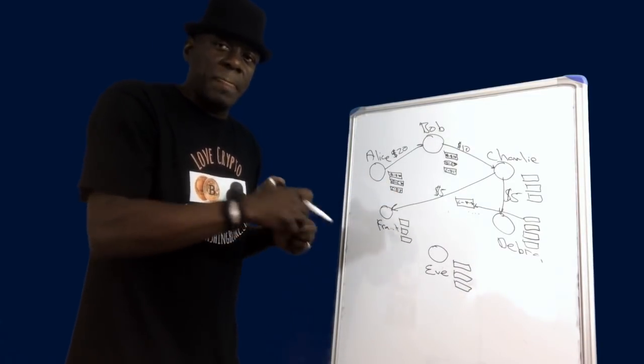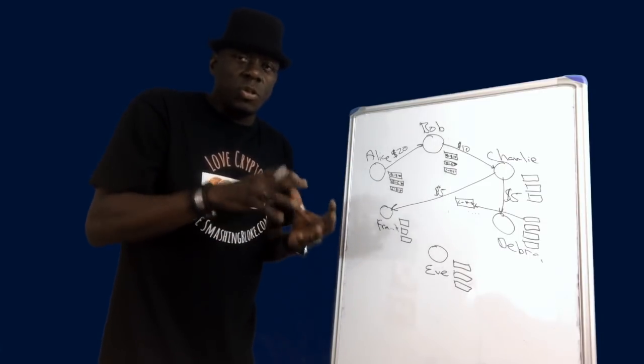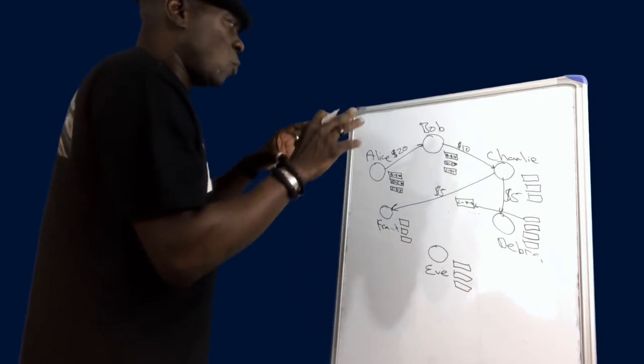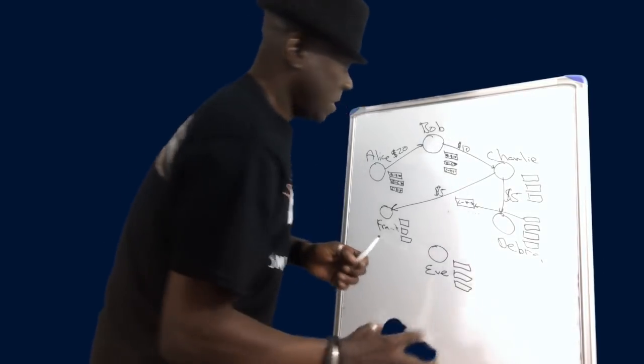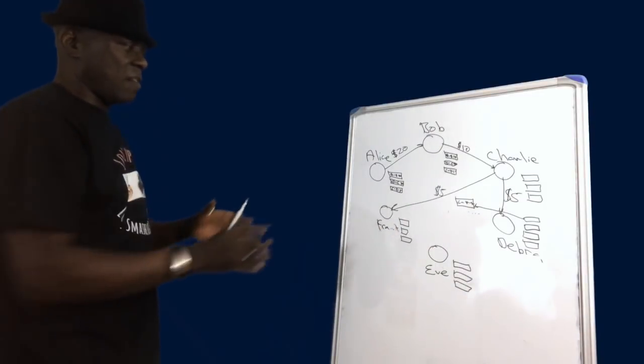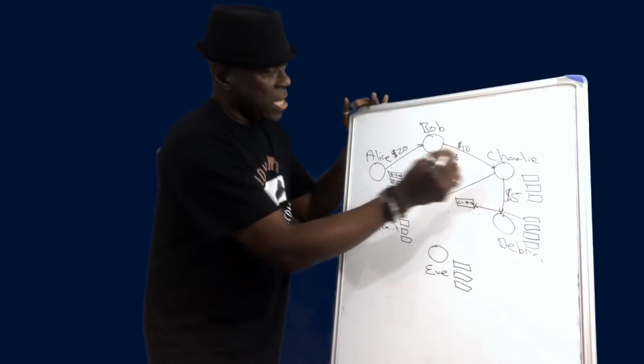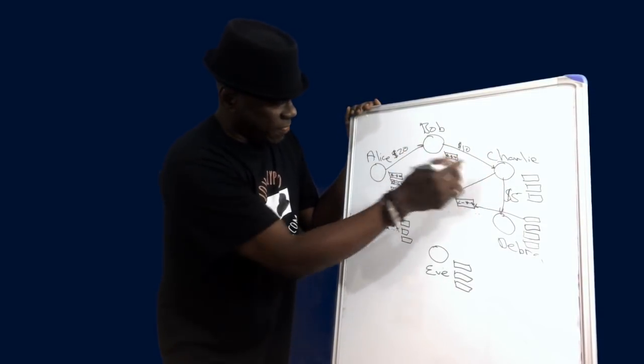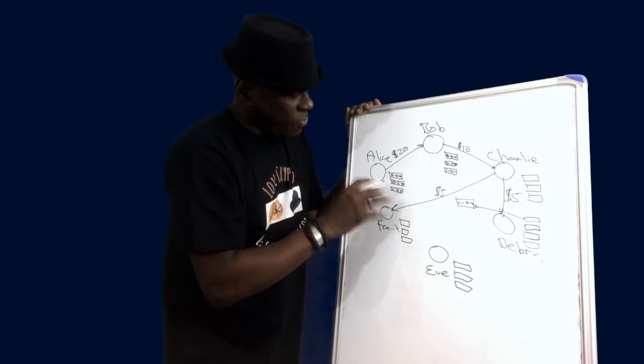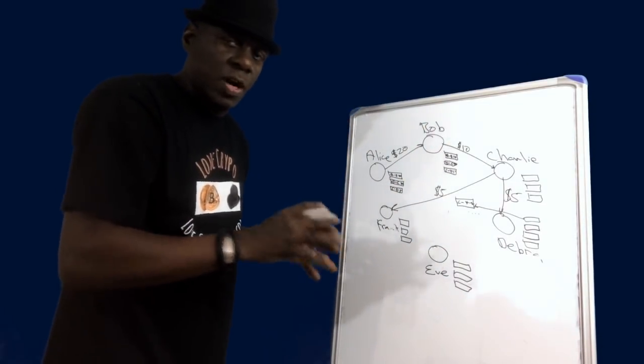Now with proof-of-stake, the difference is - let's keep the same scenario - with proof-of-stake the difference is Charlie sends $5 over to Frank.